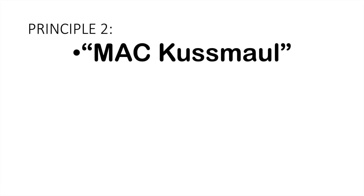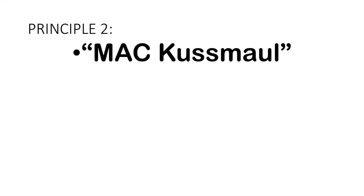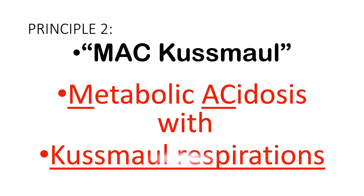Principle number two: always remember MAC-KUSMAL. In the four ABG analyses — respiratory acidosis, respiratory alkalosis, metabolic acidosis, metabolic alkalosis — we can only see Kussmaul's breathing in metabolic acidosis. Kussmaul's is the breathing condition of your patient. So in order for you to remember it, always remember MAC-KUSMAL — that is metabolic acidosis with Kussmaul's respiration. Let's credit MAC-KUSMAL to Mark Klimek.